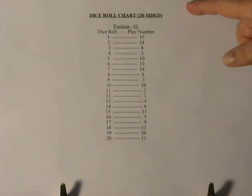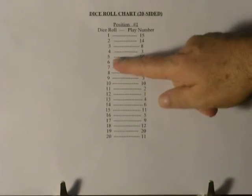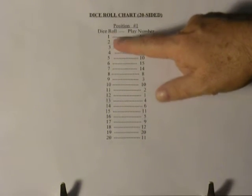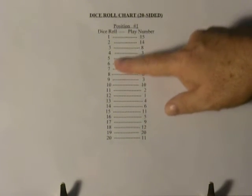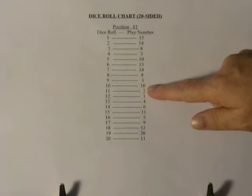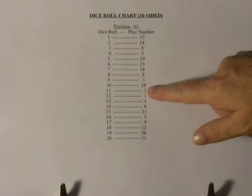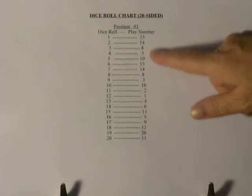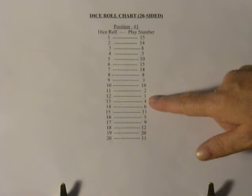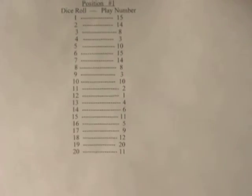Here is the dice roll chart for the 20-sided dice, position one. You have dice roll numbers one to twenty. You roll the dice — let's say it comes up ten. You go across to ten, and the play number is also ten. That play number is what you write down for position one or column one. Here is a closer look.